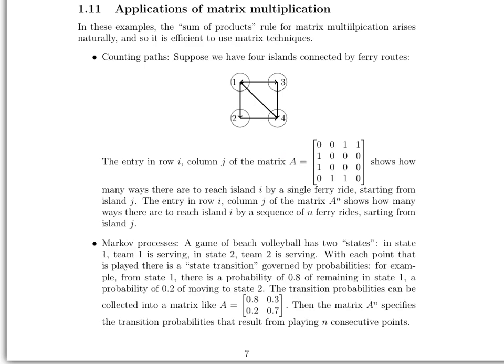Suppose we have four islands — islands one, two, three, and four — connected by ferry routes, which you can see from the arrowheads. When we're asked: after n ferry rides, how many different ways are there to reach one particular island from another? That seems almost impossible at first. We construct a matrix with information about this setup. For this column, we're concerned with island one. In this position, how many ways can I get to island one from island one with one ferry ride? There are no loops, so it's zero.